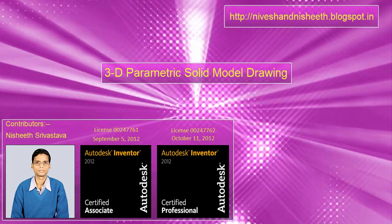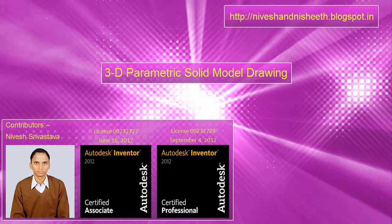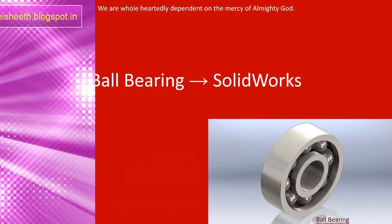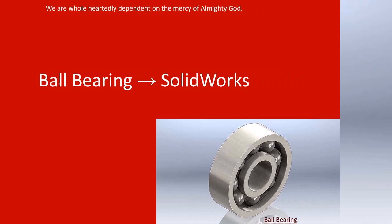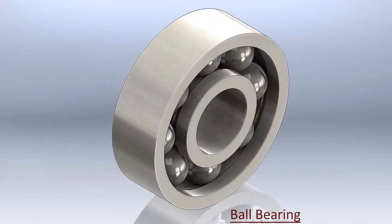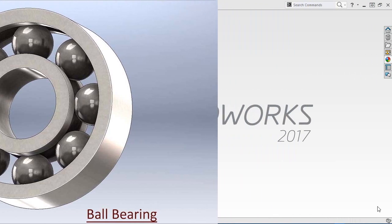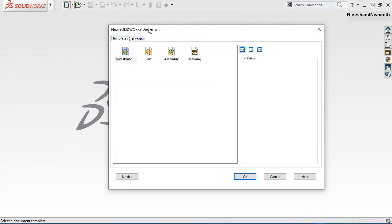Hello friends, welcome back to our YouTube channel 3D Parametric Solid Model Drawings. Today we will create a model ball bearing in SolidWorks. Here we are showing some pics of this model view so you can understand what it will look like after the model is made. So let's start the tutorial. First of all, create a new part file.